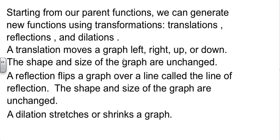A translation moves a graph left or right, up and down. It just picks up the entire graph and moves it. And it keeps the same shape and it keeps the same size. A reflection flips it over some line, which is called the line of reflection. And when you do a reflection, the size and the shape don't change. A dilation, on the other hand, does change the size and the shape. It either stretches it or it shrinks it. And it can stretch vertically or it can stretch horizontally or shrink in either direction as well.